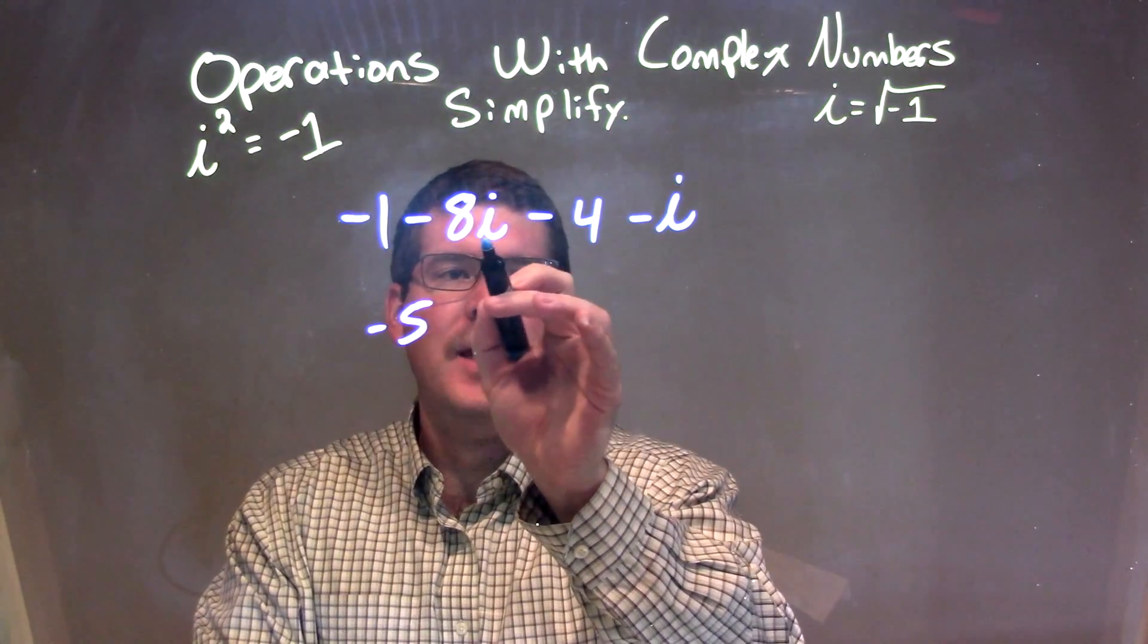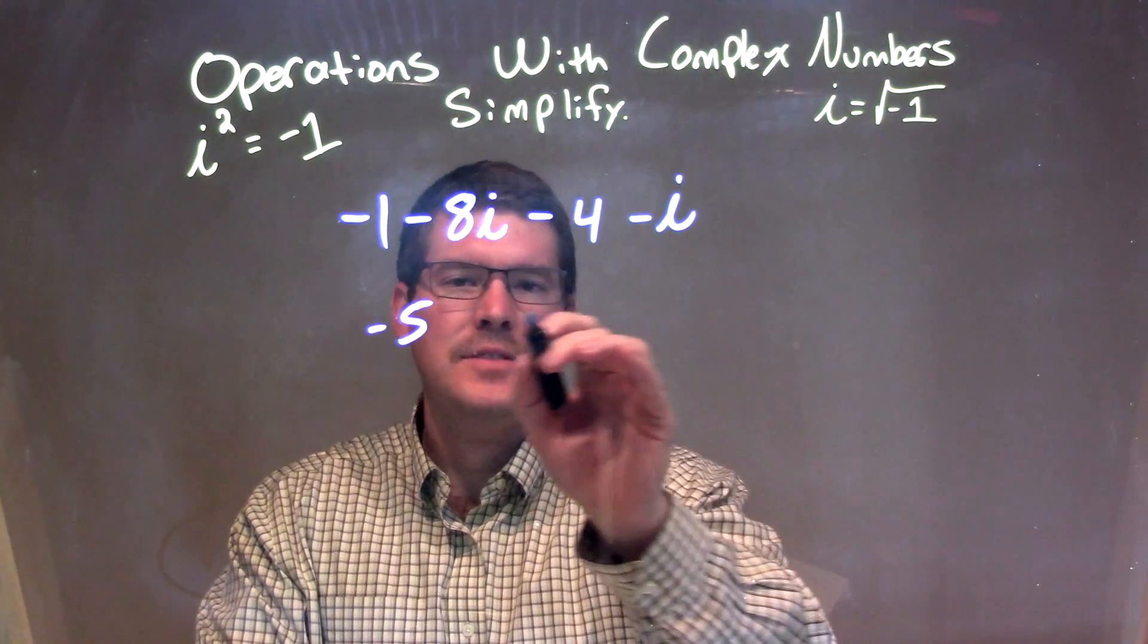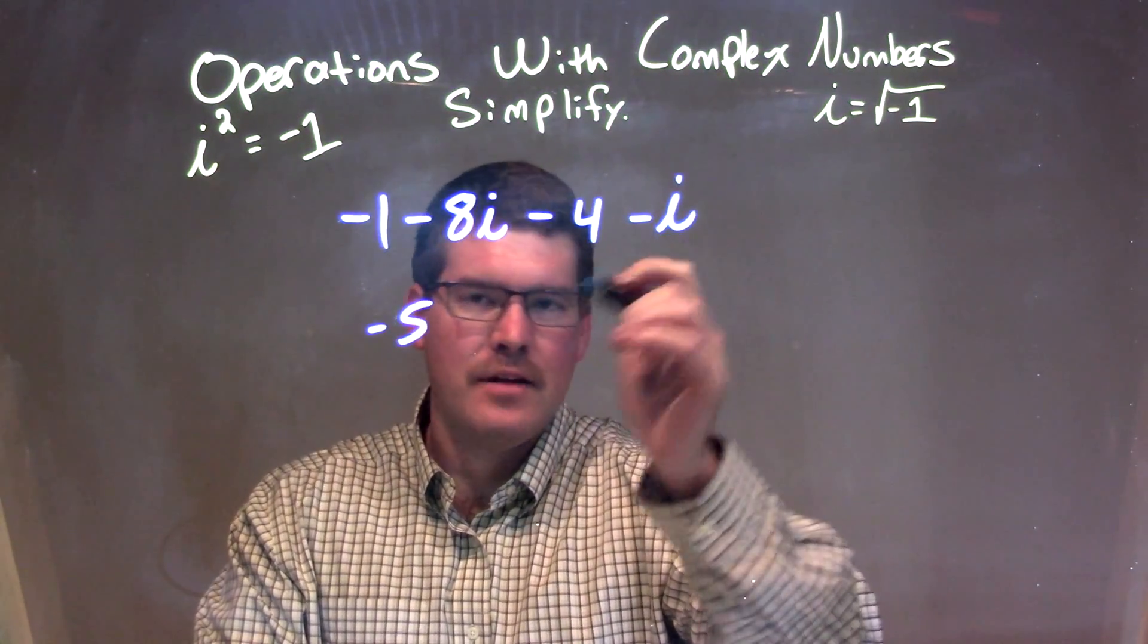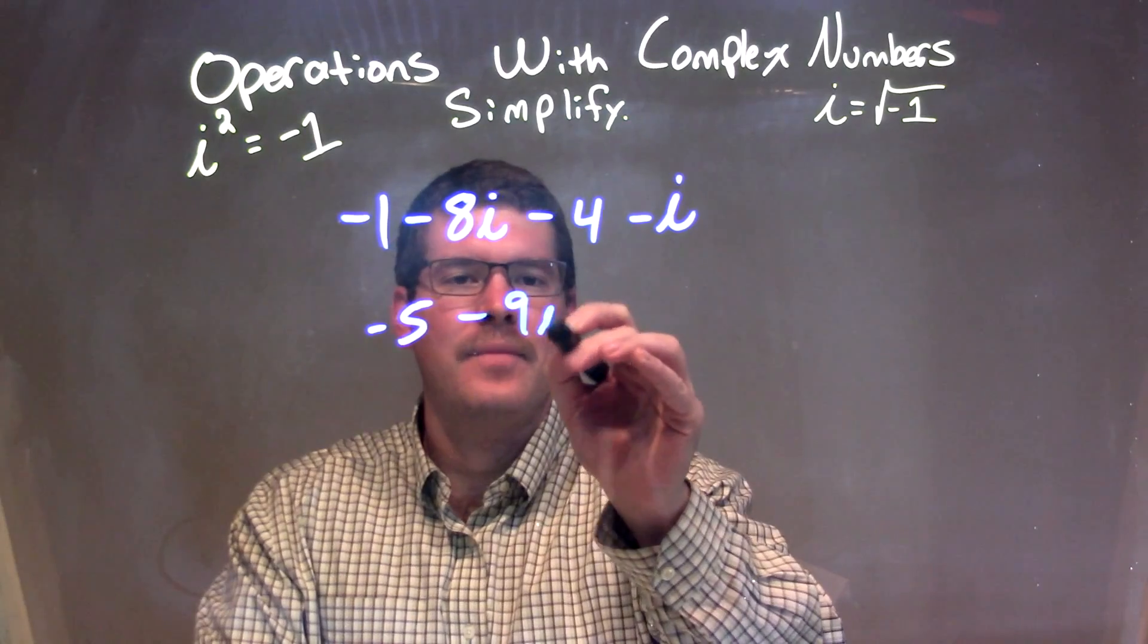Then we have negative 8i and minus i. To combine together, we can realize they're like variables: 8i and negative i. That's negative 9i.